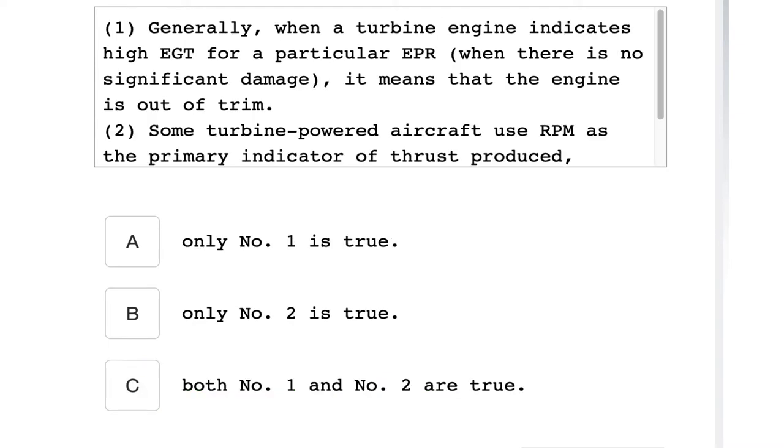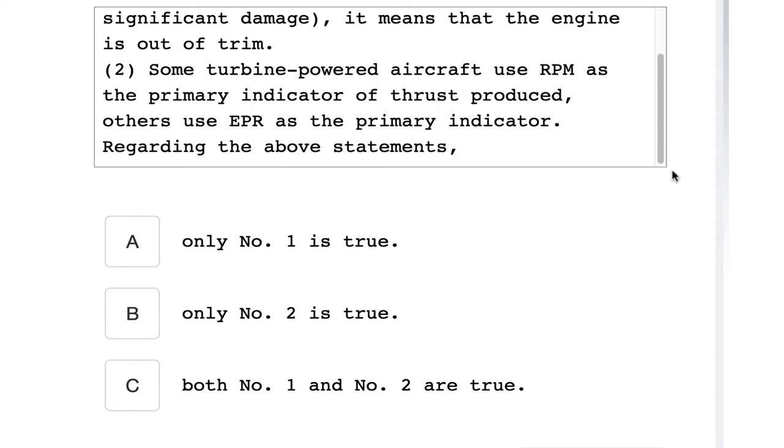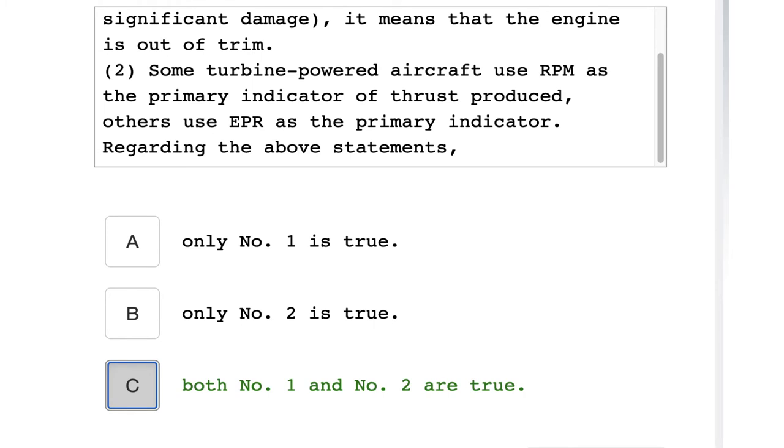Number one: Generally when a turbine engine indicates high EGT for a particular EPR, when there is no significant damage, it means that the engine is out of trim. Number two: Some turbine powered aircraft use RPM as the primary indicator of thrust produced, others use EPR as the primary indicator. Regarding the above statements, both number one and number two are true statements.